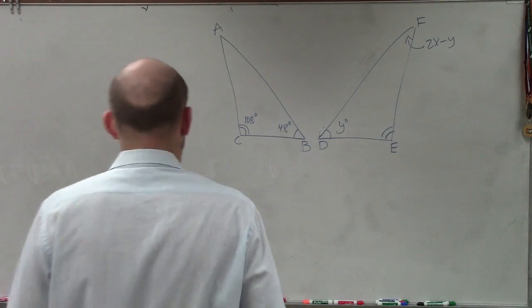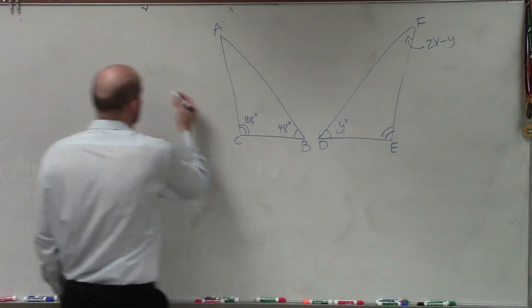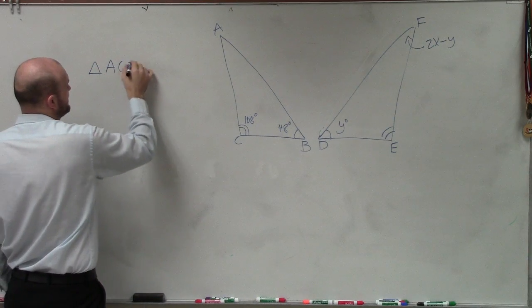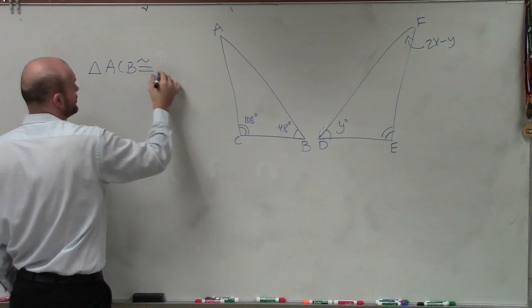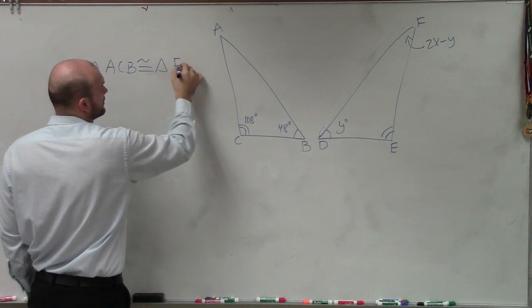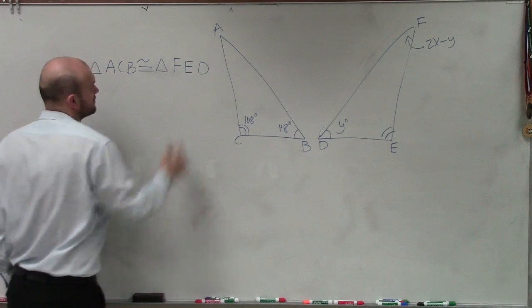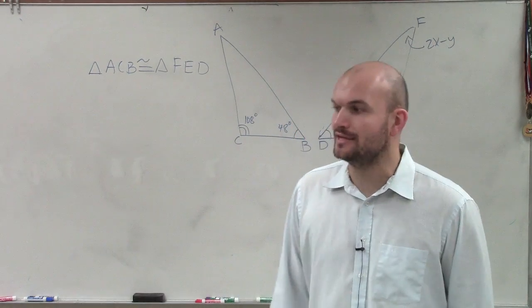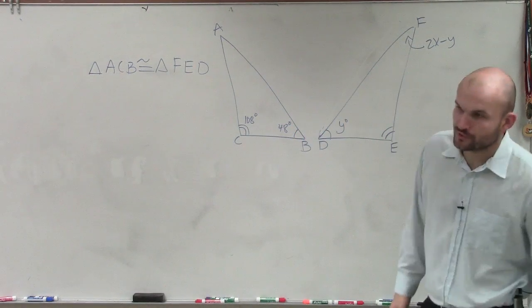What they're asking us is they tell us that triangle ACB is congruent to triangle FED. And what they want us to do is determine what are the measures of x and y, since we have congruent triangles.